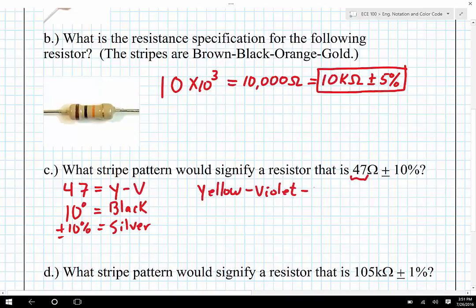And so what I find here is that I end up with a pattern that is yellow, violet, which is a fancy word for purple, black, silver. So if what I want is a resistor that is 47 ohms plus or minus 10%, then I want to find one that has a pattern of yellow, violet, black, and silver.